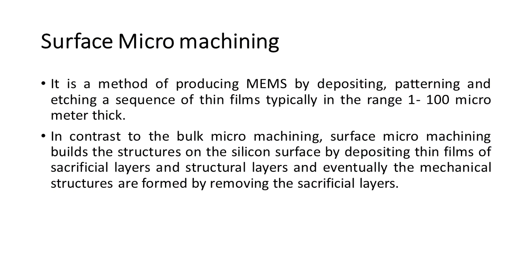It is a method of producing MEMS, by depositing, patterning, and etching a sequence of thin films, typically in the range 1 to 100 µm thick. In contrast to bulk micro-machining, surface micro-machining builds the structures on the silicon surface by depositing thin films of sacrificial layers and structural layers, and eventually the mechanical structures are formed by removing the sacrificial layers.